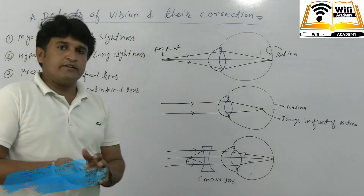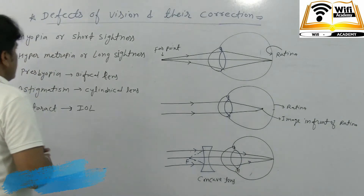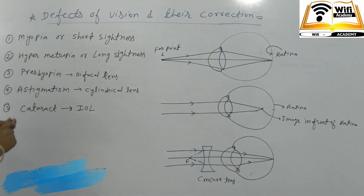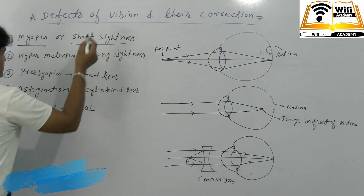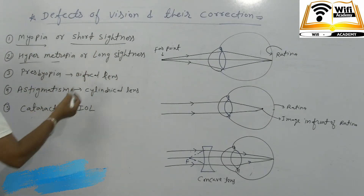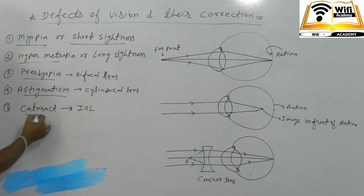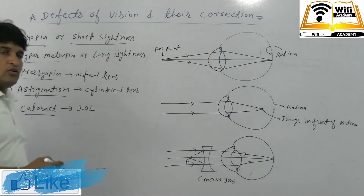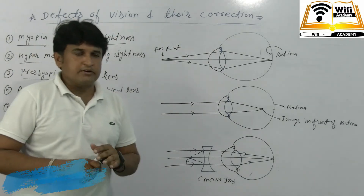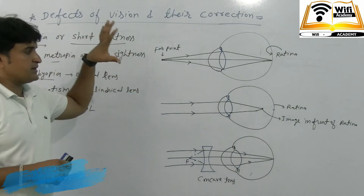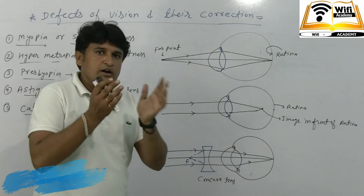We have studied about the human eye and its defects. There are five types of defects: myopia (short-sightedness), hypermetropia (long-sightedness), presbyopia, astigmatism, and cataract. We need to find out what kind of things we have to do and what remedies we have to apply for each of these five defects.